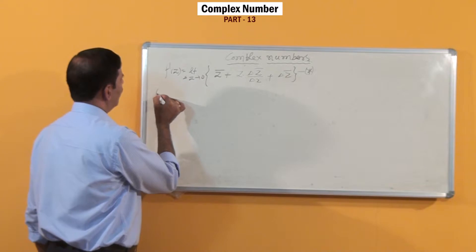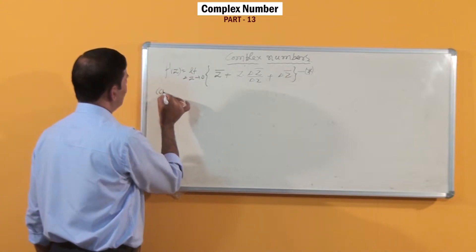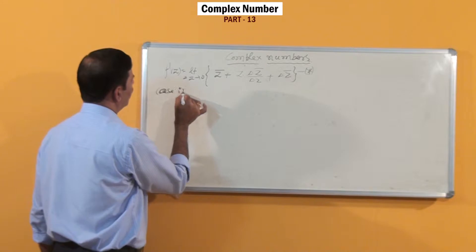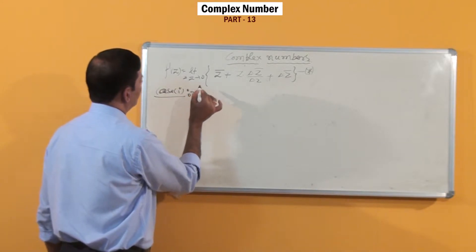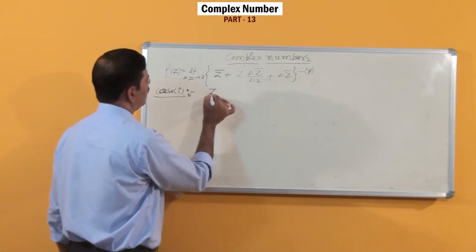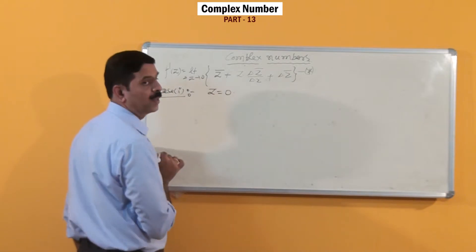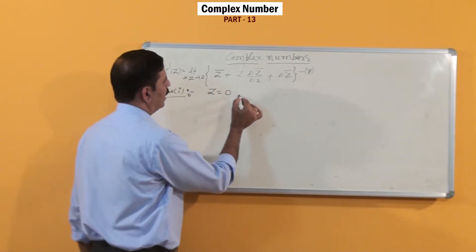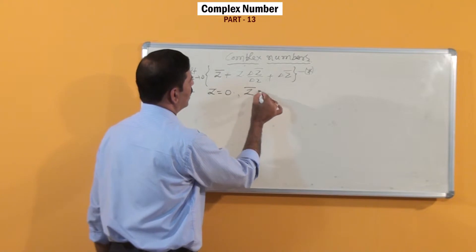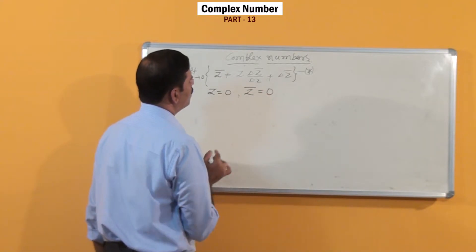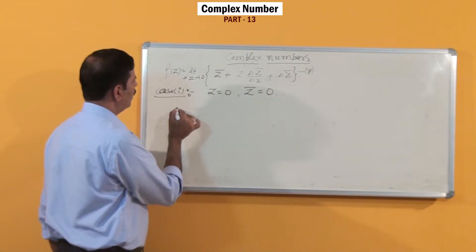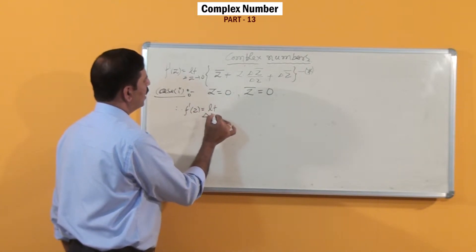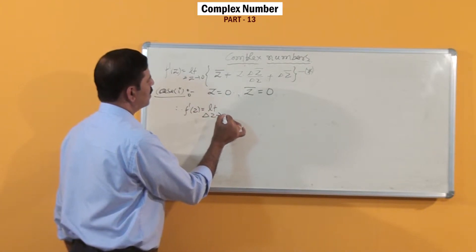Now for Case 1: z = 0. When z is equal to 0, then z̄ is also equal to 0. Therefore, f'(z) is equal to the limit as Δz tends to 0.